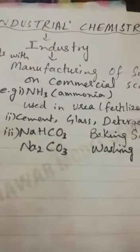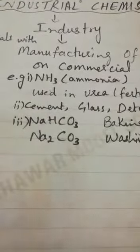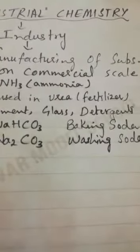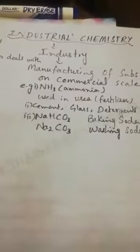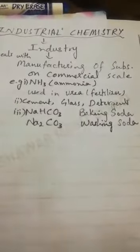Ammonia is used in the preparation of urea, which acts as a very good fertilizer for barren soils. Cement is used for construction purposes. Detergents are used for cleaning purposes. Baking soda and washing soda have their own uses. These substances are made in the industry on a large or commercial scale because they have very wide applications. So this study is called industrial chemistry.